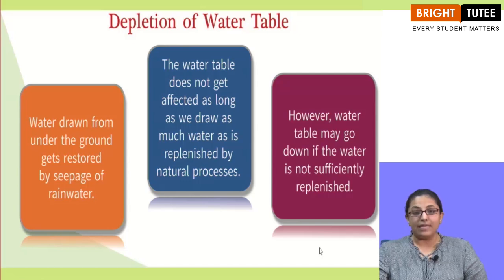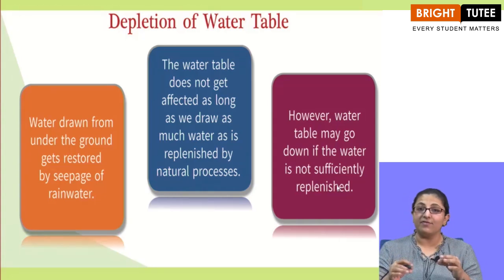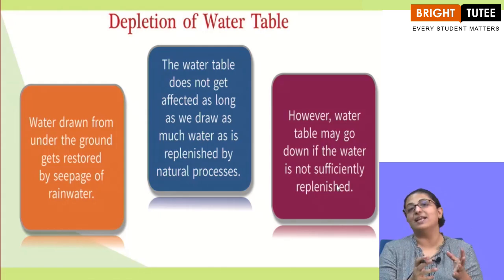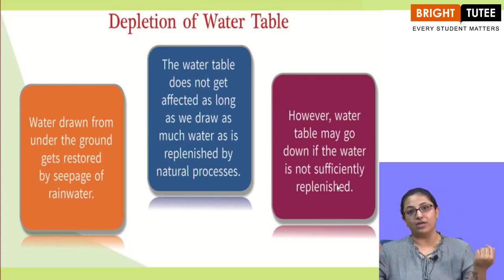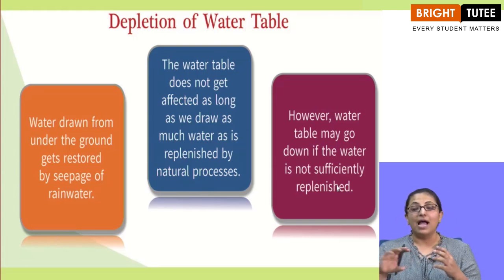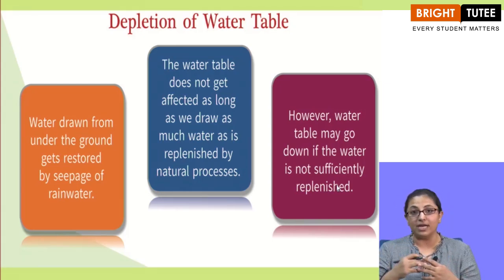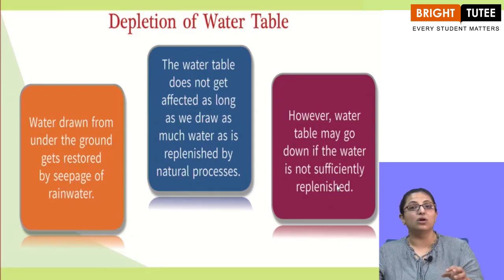However, the water table may go down if the water is not sufficiently replenished. Suppose you have drawn out a bucket of water from the ground but rain has not happened for a very long time and no water is seeping back into the ground — the water table will not be maintained; it will deplete. Basically the water table will only deplete if the drawn-out water is more than the water seeping inside.